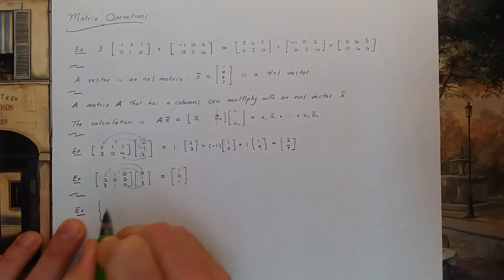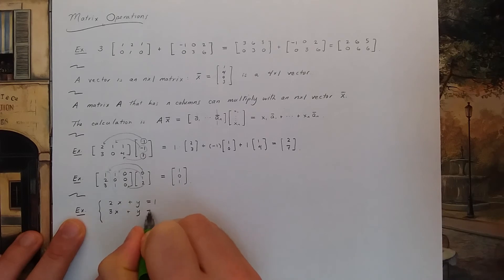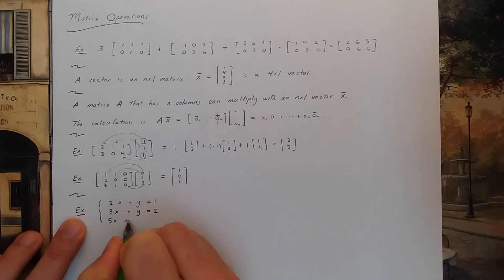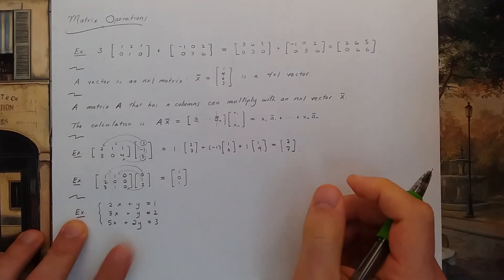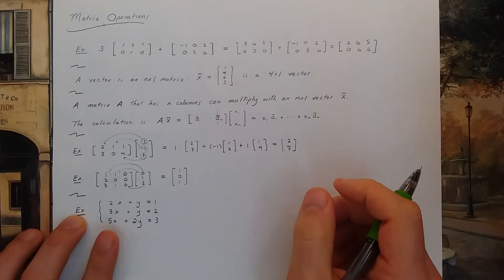Let's say I have the system 2x plus y equals 1, 3x plus y is equal to 2, and 5x plus 2y is equal to 3. So we've been talking about how to solve linear systems like this.